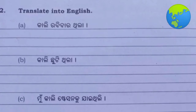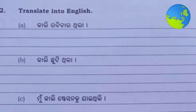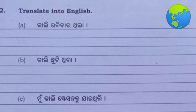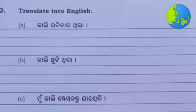Number 2: Translate into English. Number A: 'Kali roviwaro thila' - translation: 'Yesterday was Sunday.'